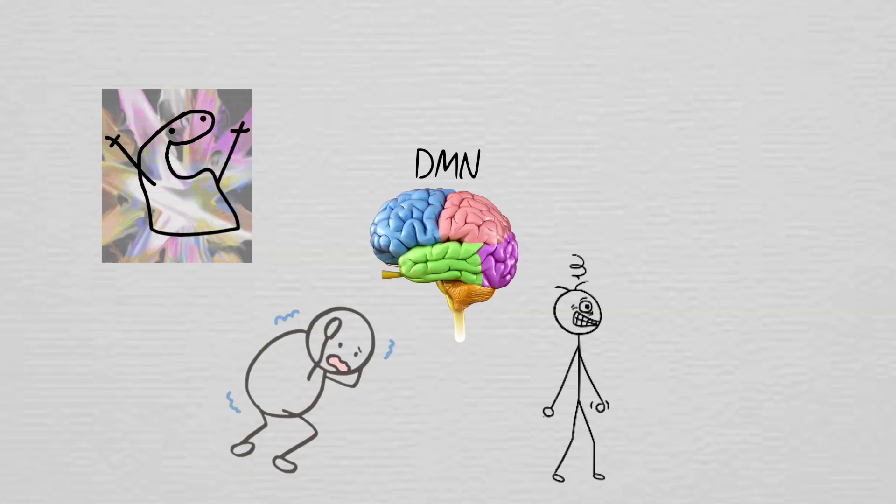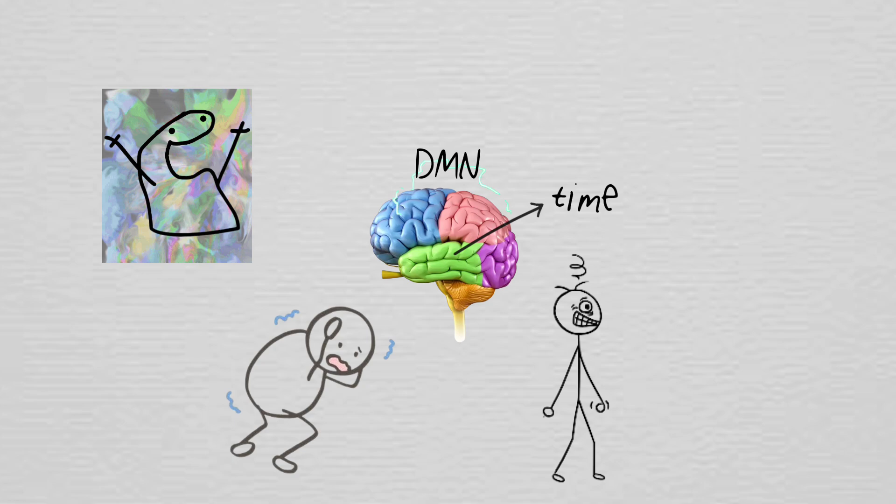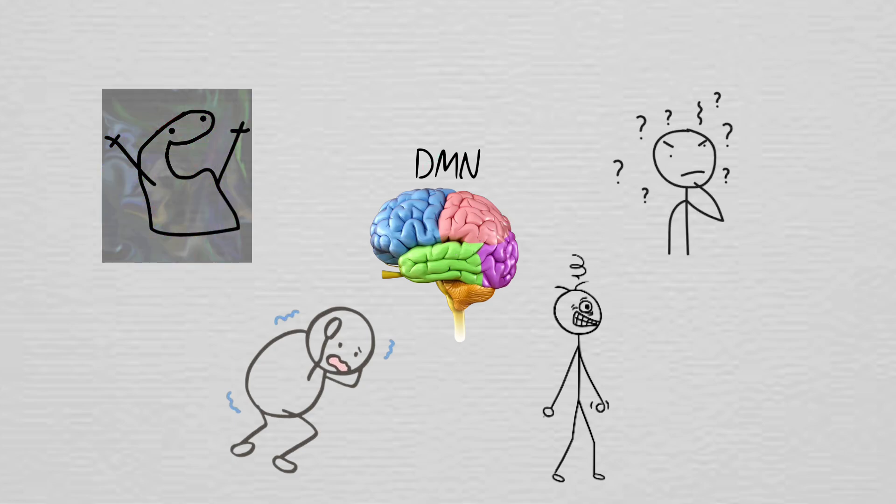Every tiny detail suddenly seems big. The areas in your brain that track time start misfiring, so minutes can feel like hours, or whole hours can vanish. You might feel stuck in a loop, reliving the same moment over and over, or get hit with weird deja vu that makes no sense.